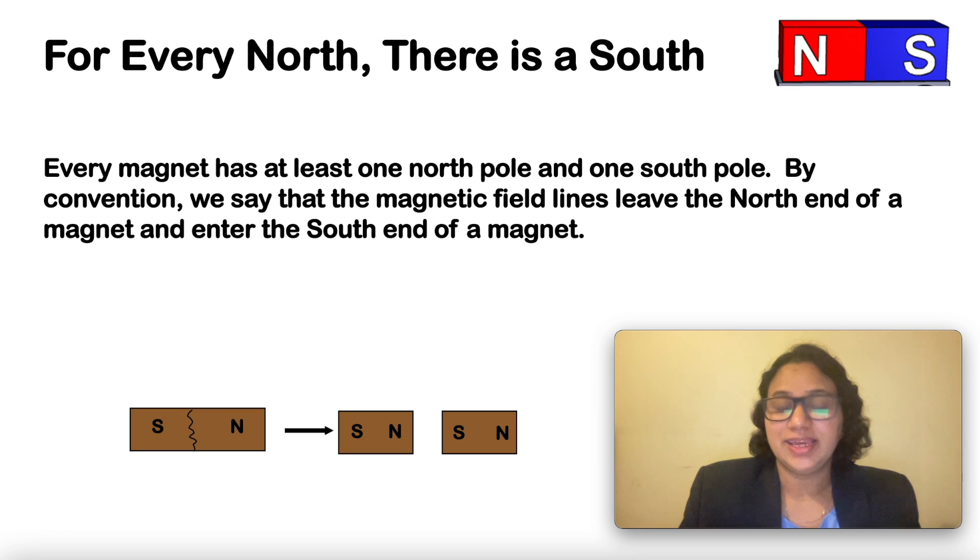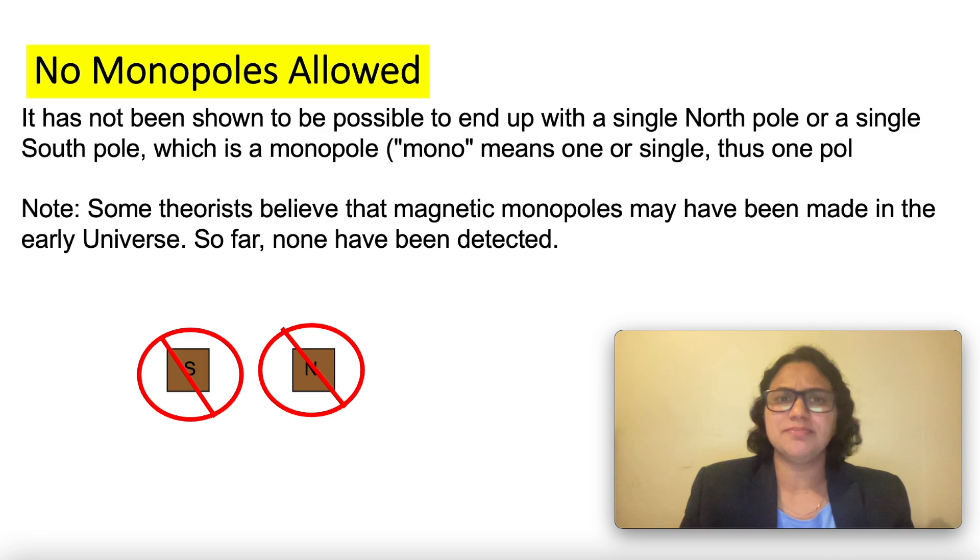No matter how small the pieces of the magnet become, each piece will have a north pole and a south pole. No monopoles allowed. What does it mean? It means that a magnet cannot have a single north pole or a single south pole.